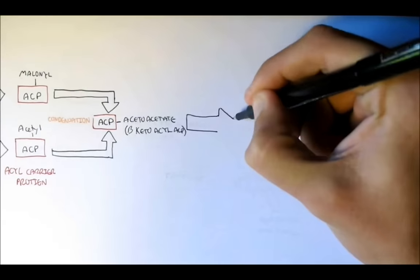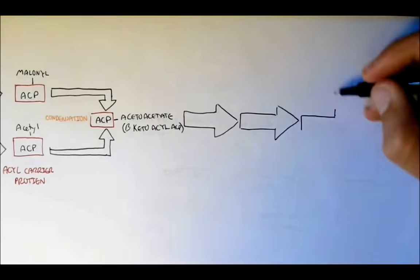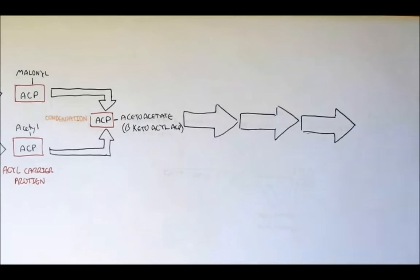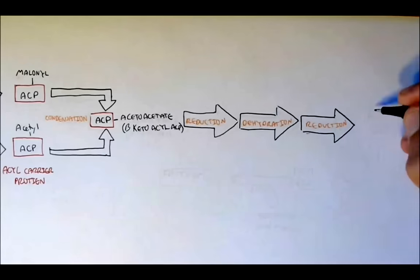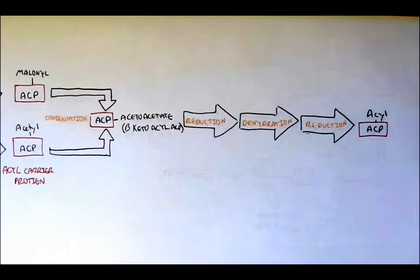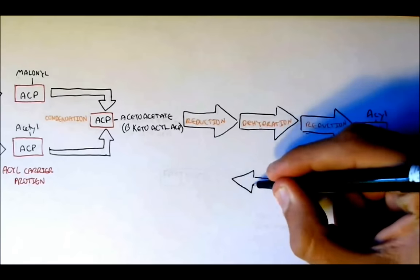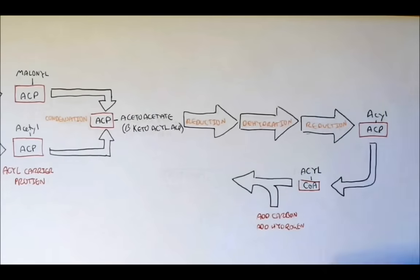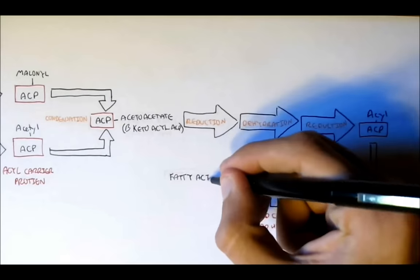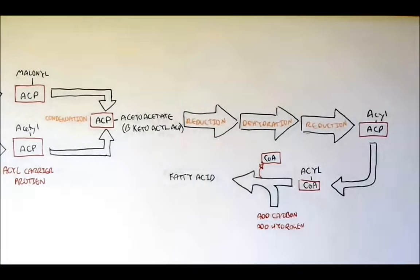Beta-ketoacyl-ACP has three other reactions after condensation: reduction, then dehydration, then reduction again, before forming acyl-ACP. This acyl-ACP is only a short fatty acid-ACP, which then leaves the acyl-carrier protein and binds to a CoA group to form acyl-CoA. By adding carbons and hydrogens with a specific enzyme, acyl-CoA can become a long fatty acid, and the CoA is also removed.